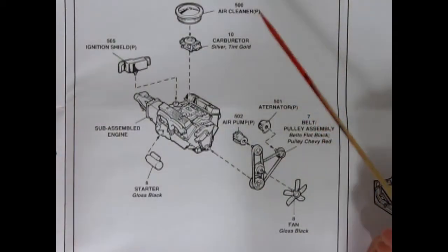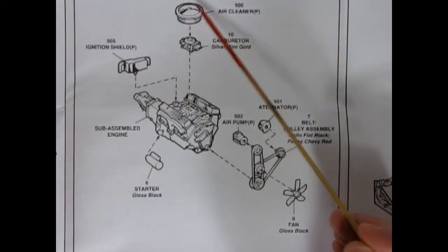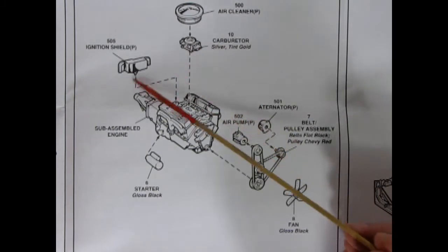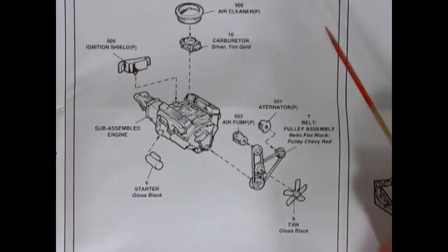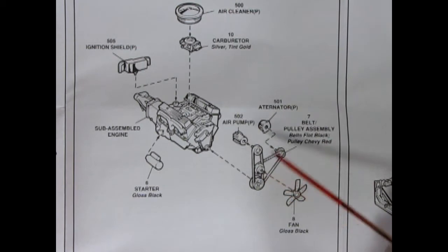Now that we've got step number two we've got the open element chrome air cleaner, the carburetor, our ignition shield, the starter motor, the air pump, the alternator, our fan belts and pulleys, and our fan.